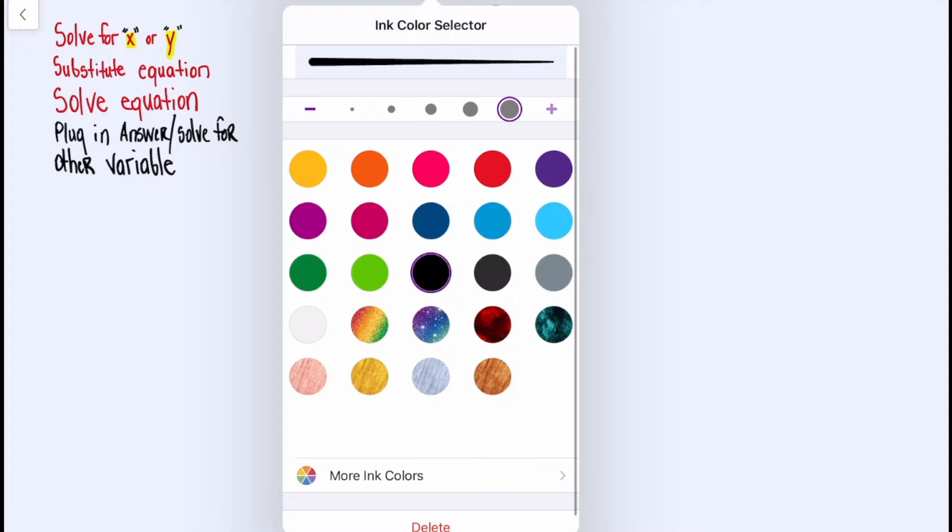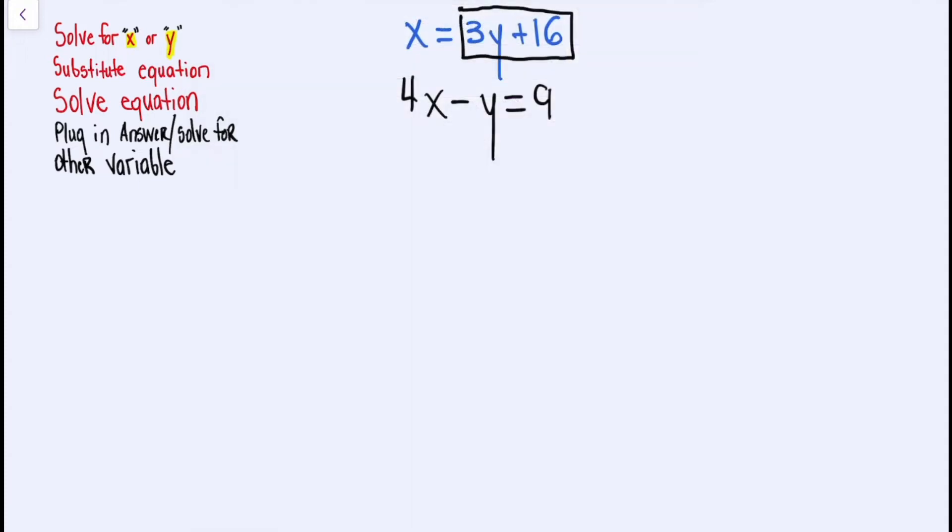If we look at our second equation, anywhere that we see X, we're going to plug in parentheses 3Y plus 16. That's the substitution part. We're going to close the parentheses and write the rest of the problem. Minus Y is equal to 9. At this step, we're solving a regular equation. We're going to start off by distributing. So we'll have 12Y plus 64 minus Y is equal to 9.